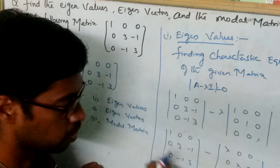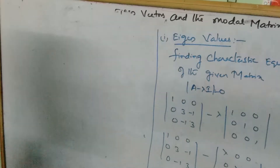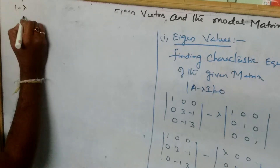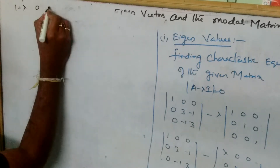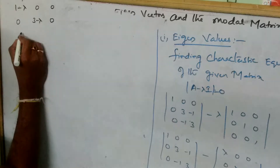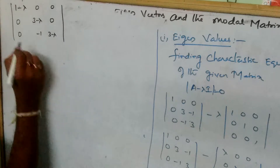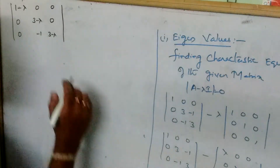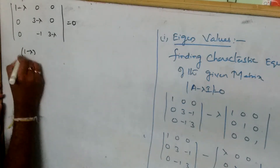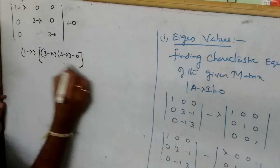Now do normal subtraction. After subtracting we get the matrix: (1 minus lambda), 0, 0 — 0, (3 minus lambda), minus 1 — 0, minus 1, (3 minus lambda). Now we take the determinant of this matrix. Expanding: (1 minus lambda) times (3 minus lambda) times (3 minus lambda) minus 0.